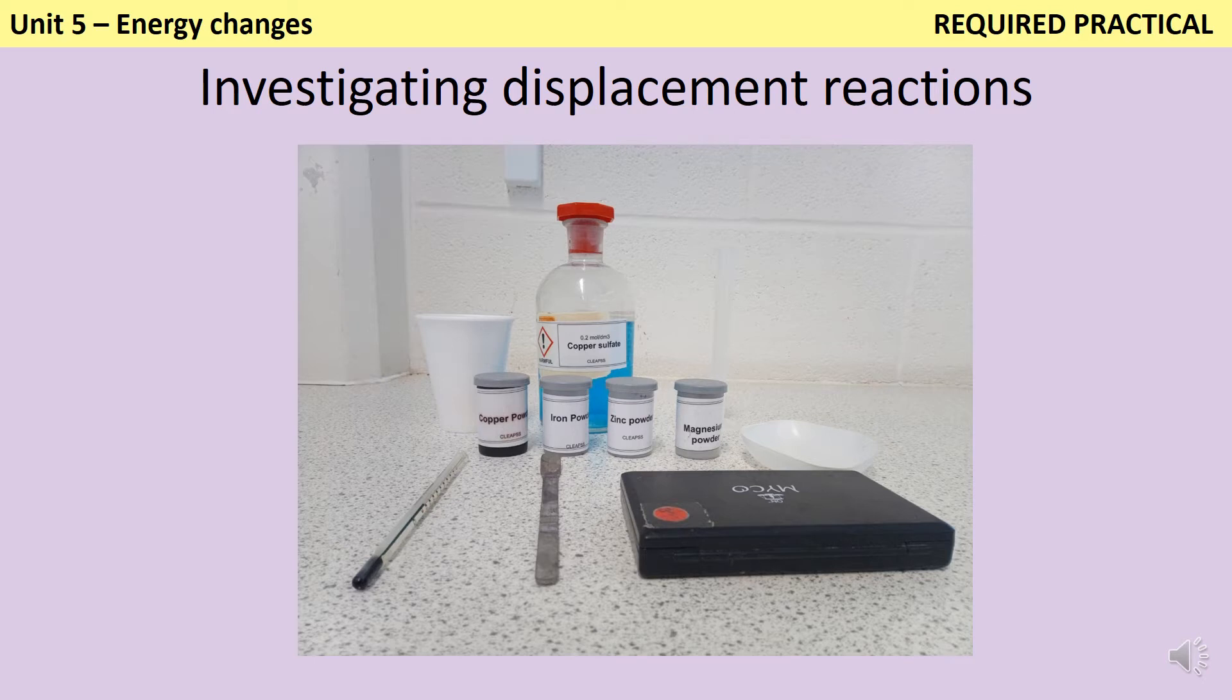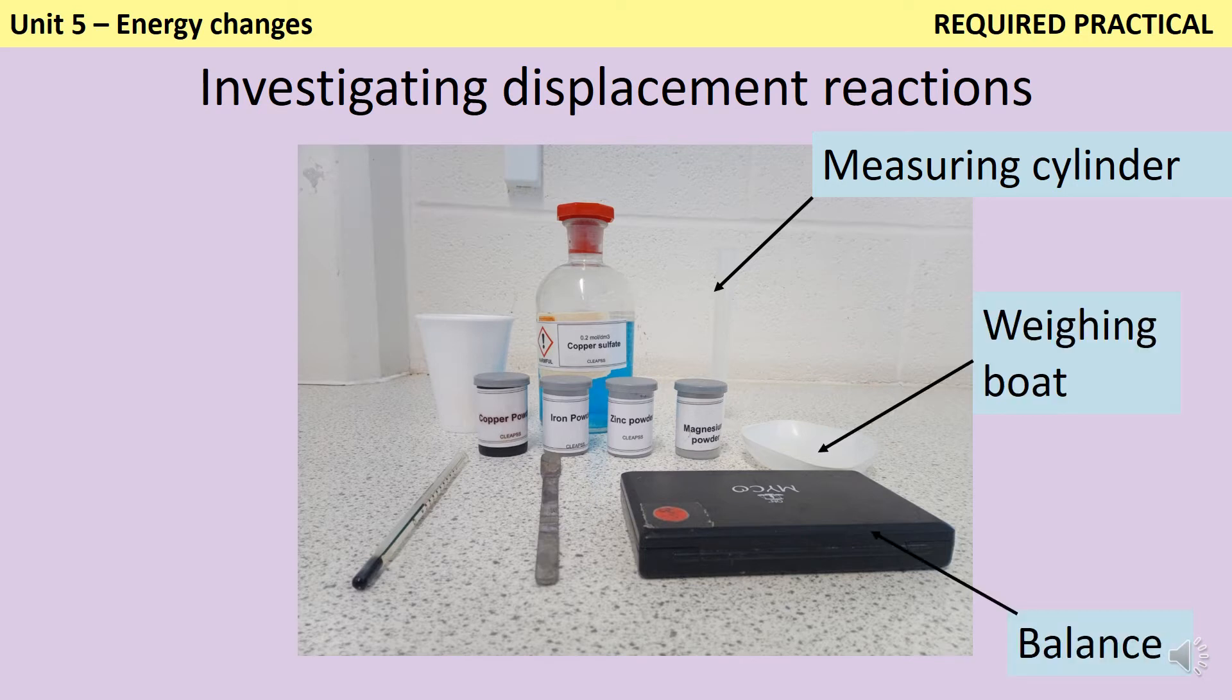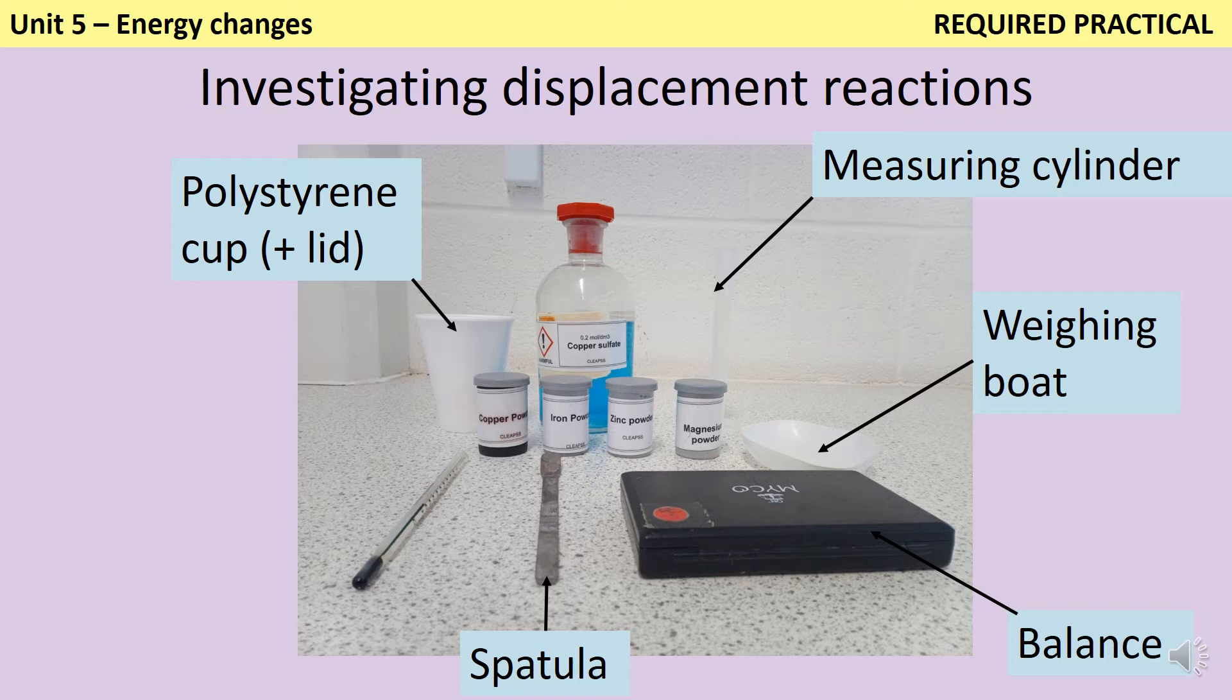To carry out the practical, I need a measuring cylinder to measure the volume of my copper sulfate, and a balance and a weighing boat to measure the mass of the metal I'm adding. This spatula will help me to accurately add small quantities of metal to the weighing boat. I'm also using a polystyrene cup as my reaction vessel, because this is going to retain heat better than a glass beaker, so it makes it easier for me to measure the temperature change.